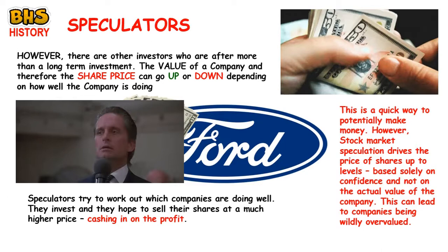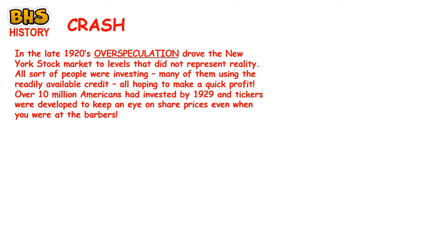Stock market speculation drives up prices, but the danger is that speculation can pump a company's value way beyond what it's actually worth — shares become overvalued, bearing no reality to the actual value of the company. This is what happened in the 1920s. The decade saw absolute over-speculation: everybody was buying shares, not just the rich. People were using cheap credit to buy shares hoping to make a quick profit, and banks were willing to lend because it seemed lucrative. Over 10 million Americans had invested by 1929.